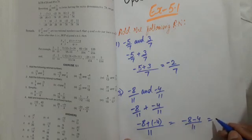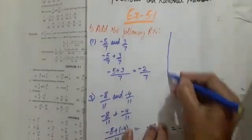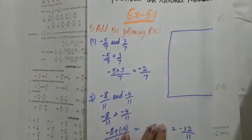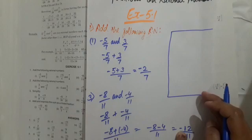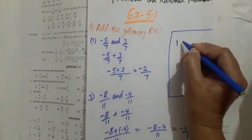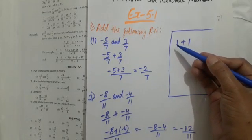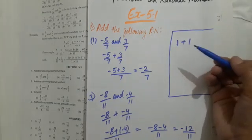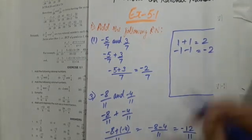Then -8 and plus and minus change to minus, so -4/11. Now both are negative, so they will add: 8 plus 4 is 12, but the sign with them will be minus. Sorry, look at here, this is just for your understanding, don't write on your notebook.